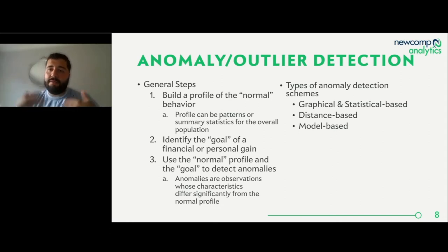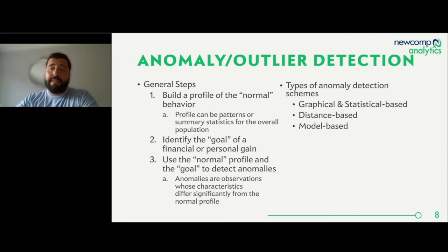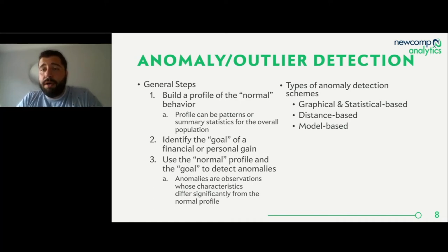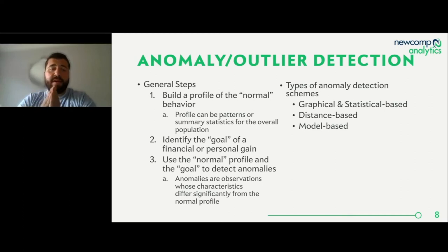For example, someone like me would not be on a Tuesday at 10am in South America spending $12,000 on their Visa when I just spent $2 for my morning coffee at Starbucks in Toronto. Looking at that general profile and transaction history, you start to understand what normal and not normal looks like. Then you identify the goal of financial or personal gain. For transaction fraud, the KPI is fairly simple: money extracted from an account that shouldn't be — dollars withdrawn, dollars debited from a specific account.